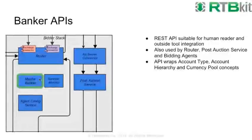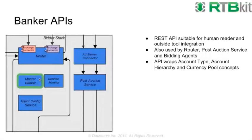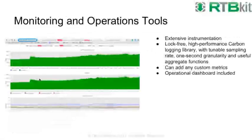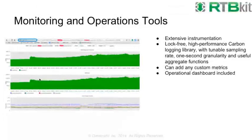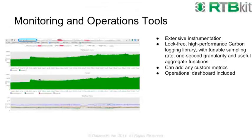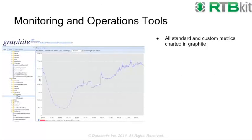RTB Kit is instrumented extensively with carbon logging, with sampling granularity down to one second and many aggregates built in. Running Graphite over this carbon data gives a tree and dashboard view of metrics. There are probably 50 to 75 documented metric keys on the RTB Kit wiki — there's a lot of data there and a fair learning curve, but it's well-documented.